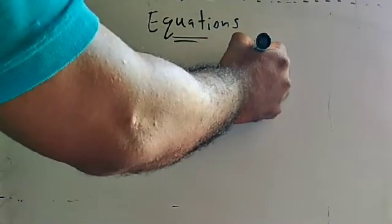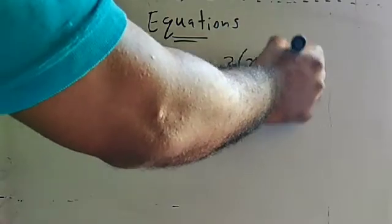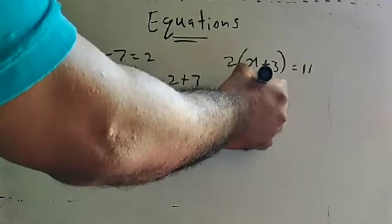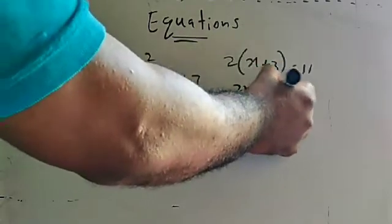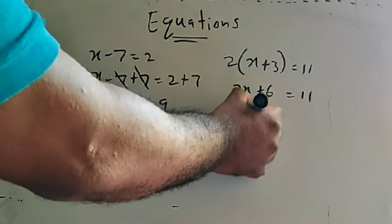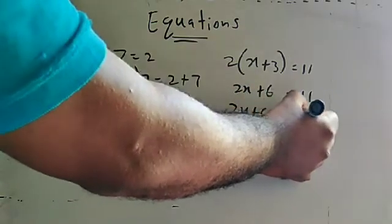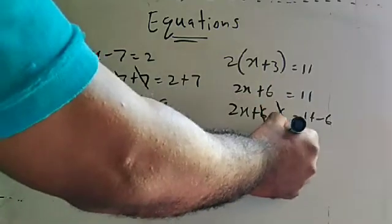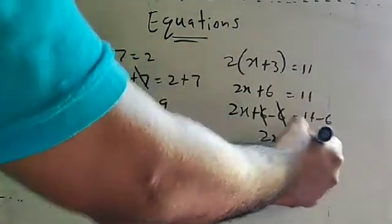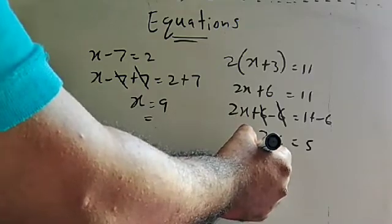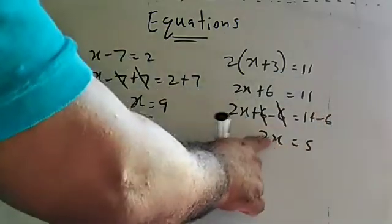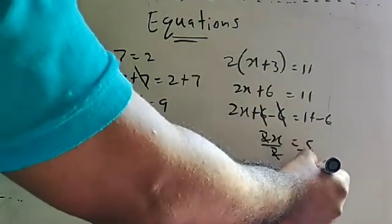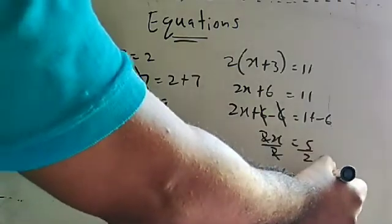Then also brackets are there. Two times (x plus 3) is equal to 11. Remove the brackets: 2 into x is 2x, and 2 into plus 3 is plus 6. So 2x plus 6 equals 11. To cancel plus 6, add minus 6 to both sides. Then 2x equals 11 minus 6, which is 5. Divide both sides by 2. The answer is 5 divided by 2, which as a mixed number is 2 and 1 upon 2.